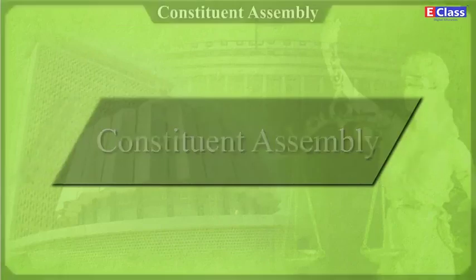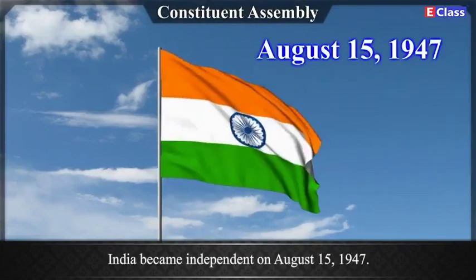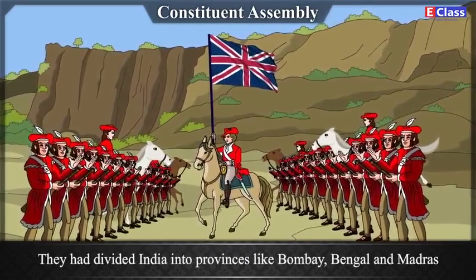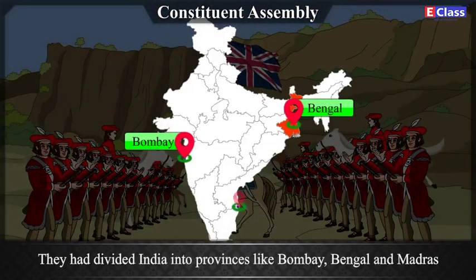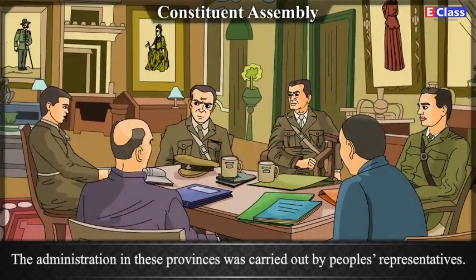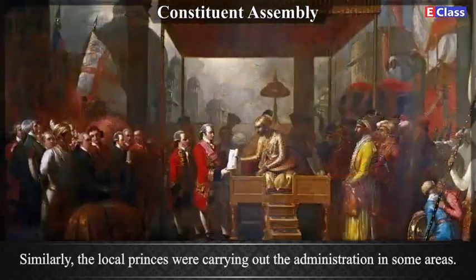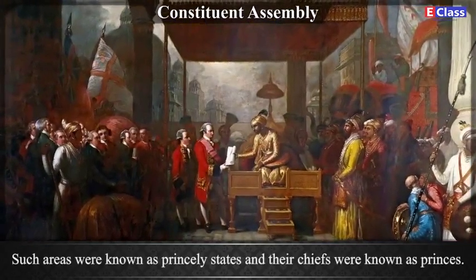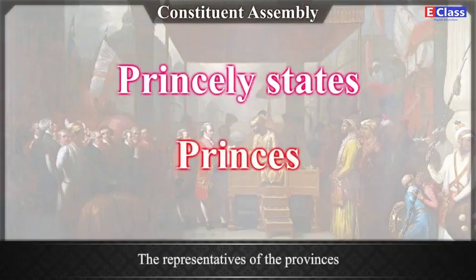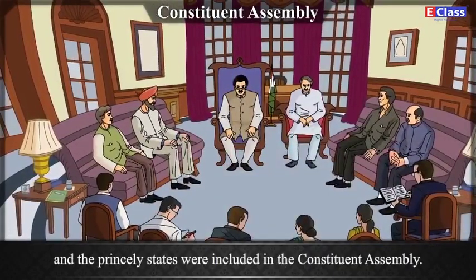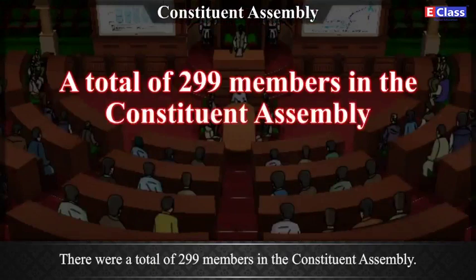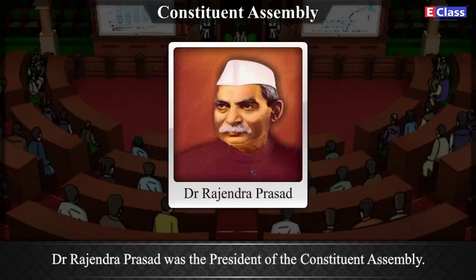Constituent Assembly: India became independent on August 15, 1947. Before that, the British ruled over India. They had divided India into provinces like Bombay, Bengal and Madras for the convenience of administration. The administration in these provinces was carried out by the people's representatives. Similarly, the local princes were carrying out the administration in some areas. Such areas were known as princely states and their chiefs were known as princes. The representatives of the provinces and the princely states were included in the Constituent Assembly. There were a total of 299 members in the Constituent Assembly. Dr. Rajendra Prasad was the President of the Constituent Assembly.